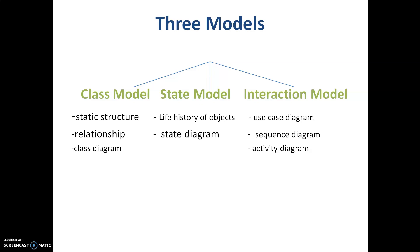A use case diagram shows what basic functionality the software provides and for what purposes you are going to use it — it has actors and use cases. Actors directly interact with the system but are not part of the system. A sequence diagram shows the sequence of events over a period of time — not the exact time, but the order matters, like steps in a recipe. An activity diagram tells us the important operations taking place, the flow of it, and how things proceed.